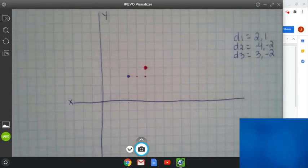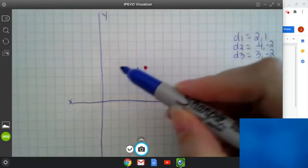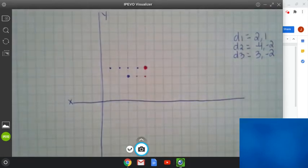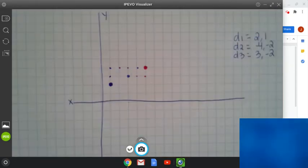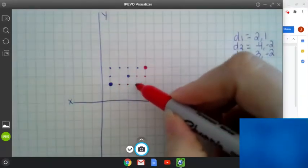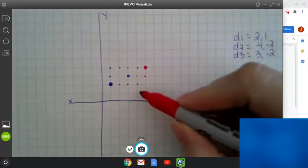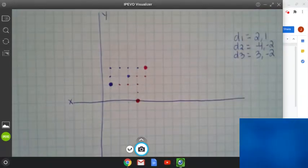My next movement is negative 4, negative 2, which means I'm going to go to the left, 1, 2, 3, 4, and I'm going to move down 2, 1, 2, and our last one is 3, negative 2. I'm going to go over 1, 2, 3, and I'm going to go down 1, 2. The red dot is our final position.